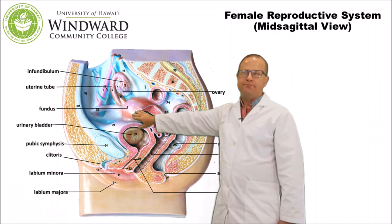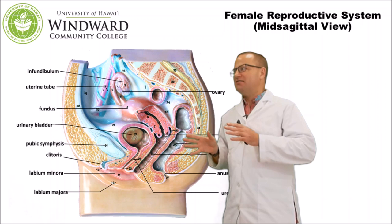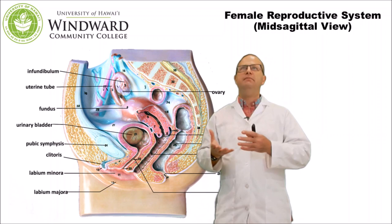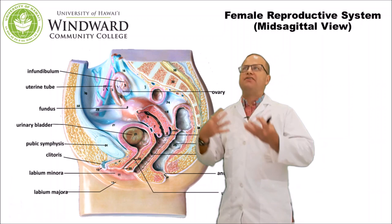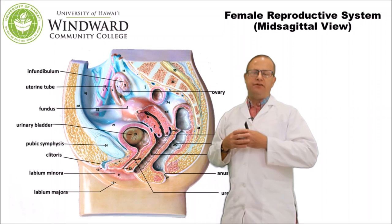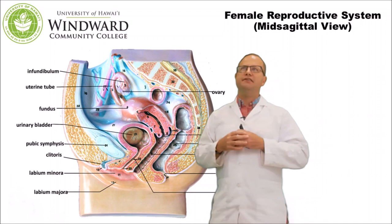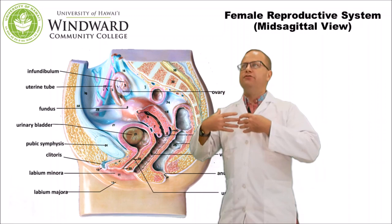Job number four is gestation — a big one. Unlike chickens, the human female must care for and gestate the embryo and later fetus for nine months. We need a place for it to grow — the uterus — and a connection to exchange nutrients between mother and fetus, called the placenta, which we discuss in the next lab. Job number five, technically not part of the reproductive system, is lactation: the female must provide nutrition after birth through lactation.